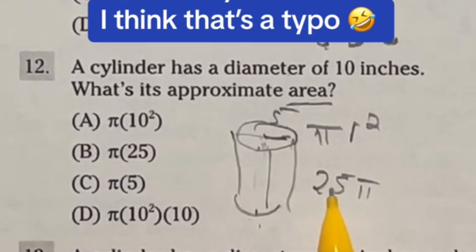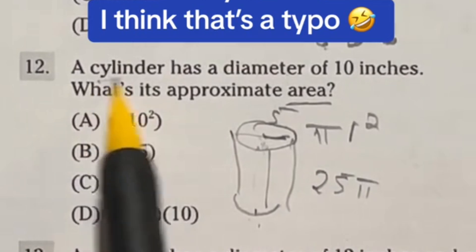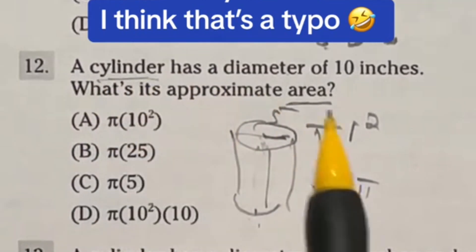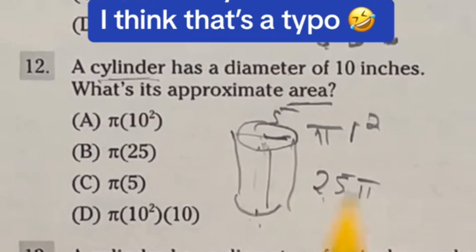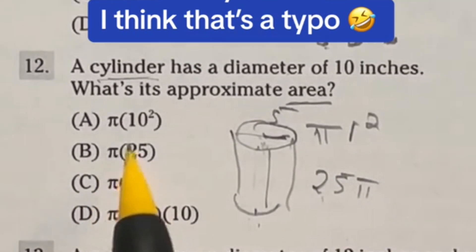So you wouldn't be able to find the volume if you wanted. Maybe you know what, maybe it means cylinder was supposed to be circle. Maybe that's the typo. If that's the typo 25 pi, our answer here is B.